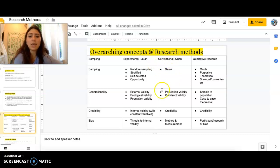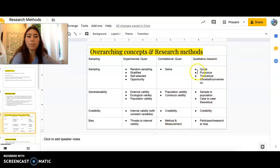So, correlational, same. Generalizability, you have to look at the population and then the construct validity. And then credibility is just credibility. That's literally what it said. And then bias, you have to look at your method and measurement. And then qualitative research, you're going to look at quota, purposive, theoretical, snowball, slash convenience. These are all ways to have people be involved in your qualitative research. And then your generalizability, I cannot say this word! Oh my gosh, it's too early. It's 8.47. I'm not skipping class, by the way. I have a free period. And then sample to population, case to case, theoretical, credibility, and then participant researcher bias.